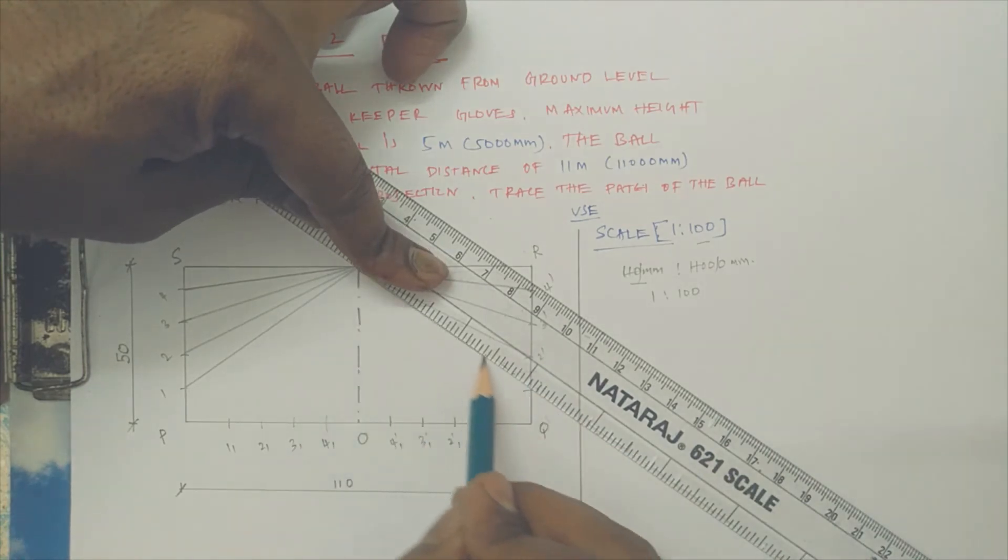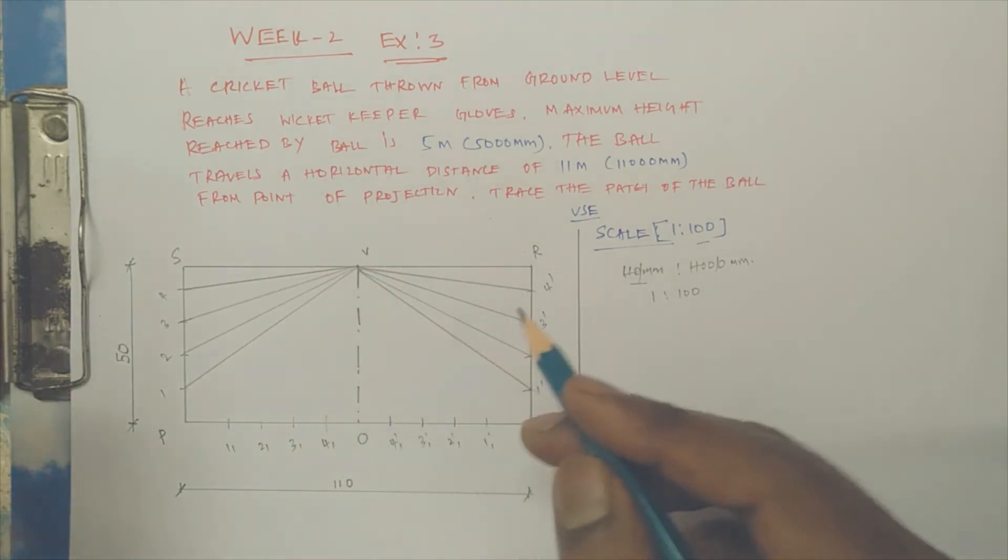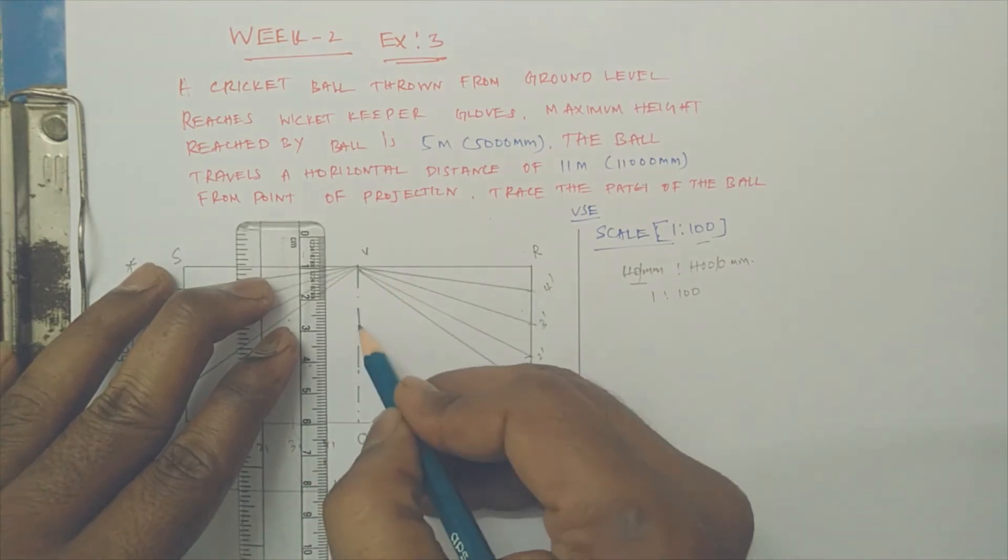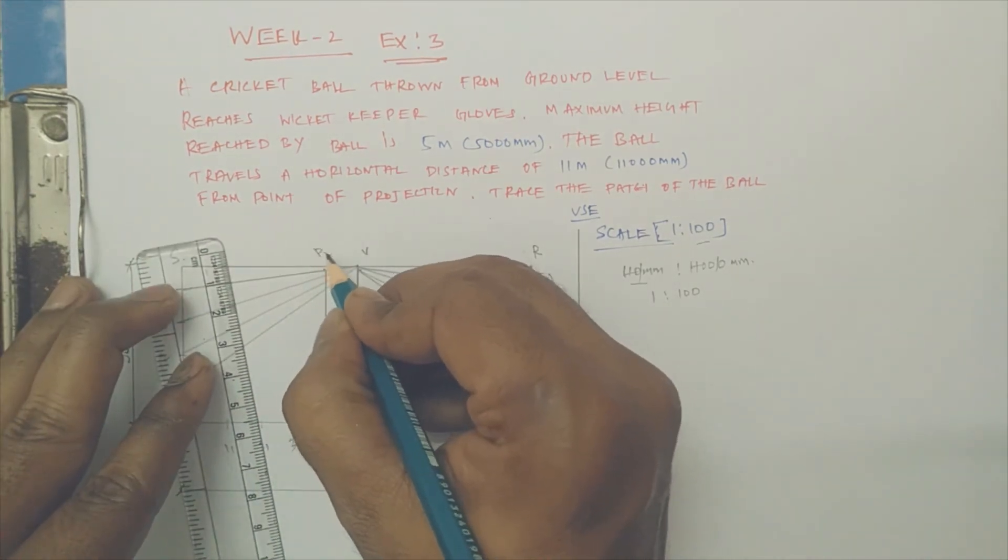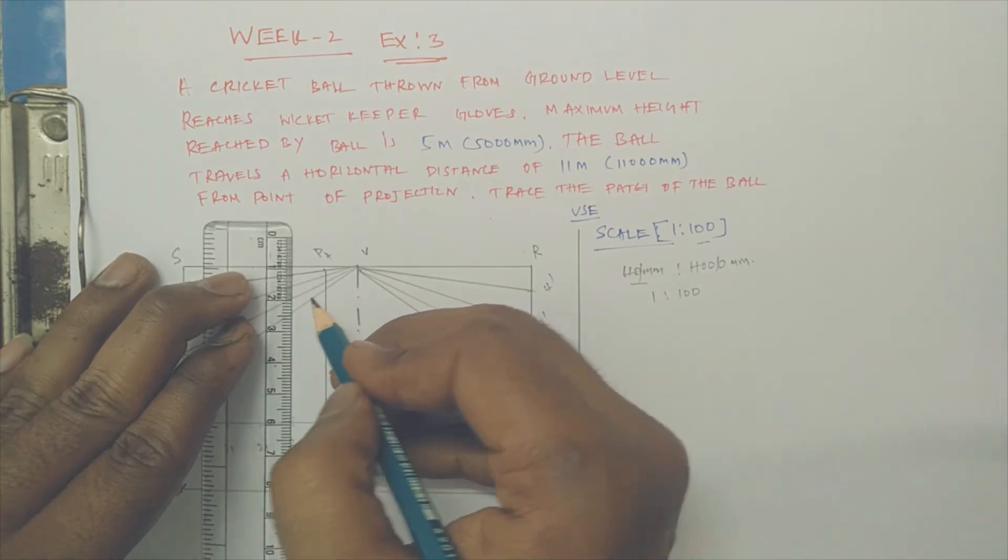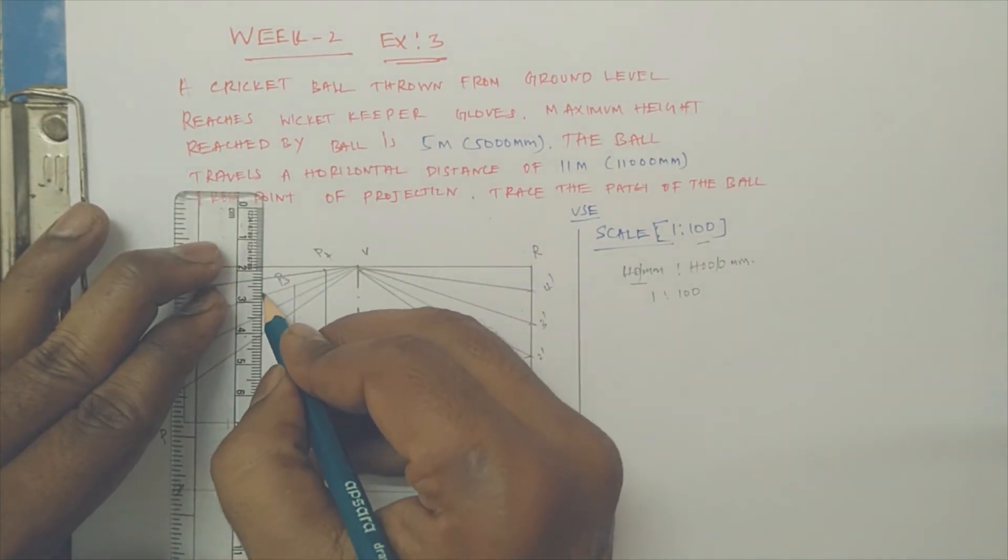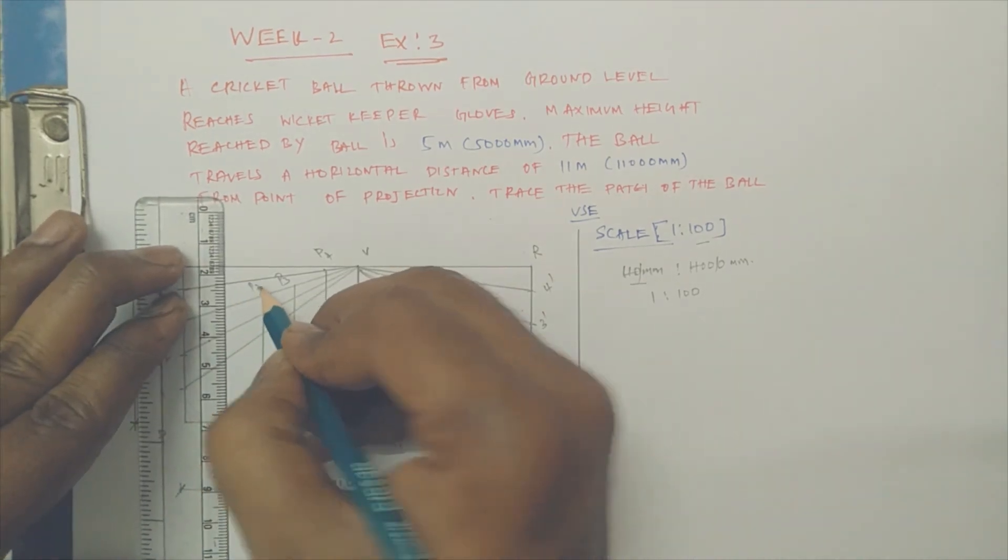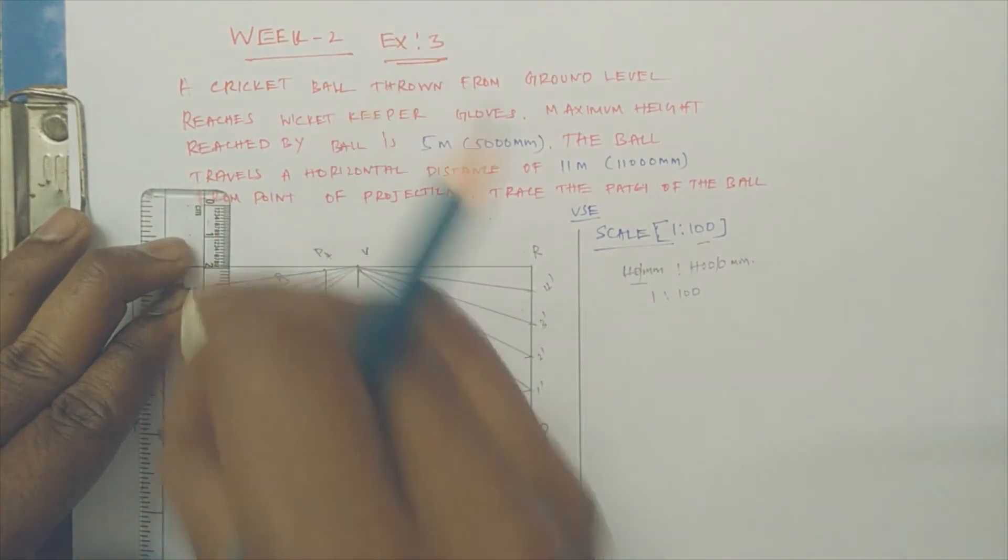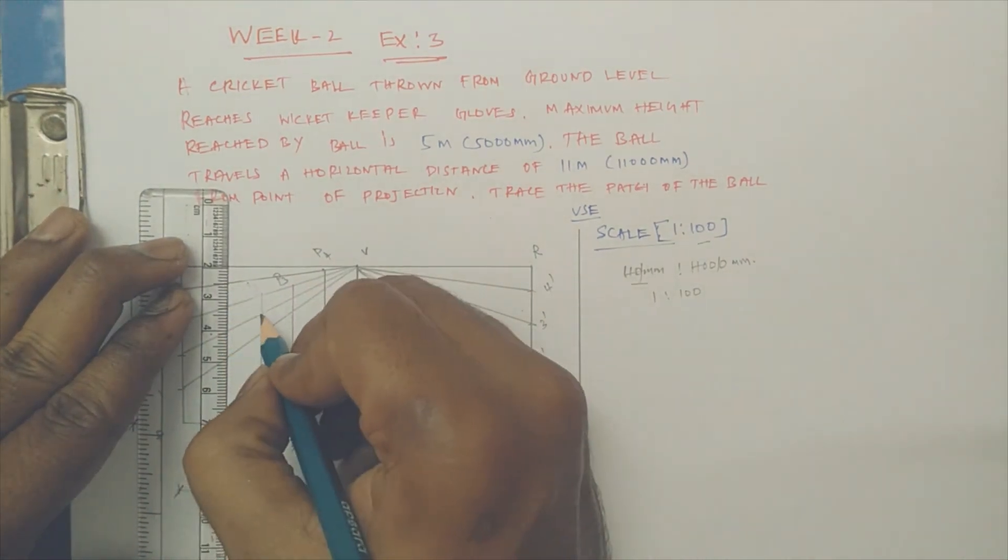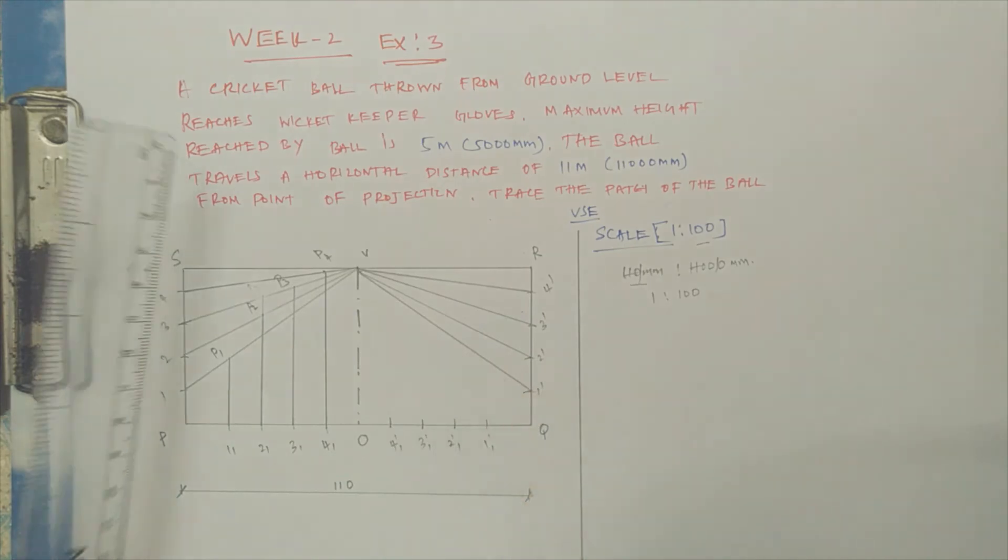Now erect a perpendicular line from four-one to four—that will be the traced path. It is supposed to be parallel to CG. This is point number 4 and we are connecting to 3. This is P3. Erect a vertical line. This is P2, sorry there is a mistake—up to here only it is P2. This is P1.